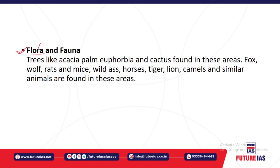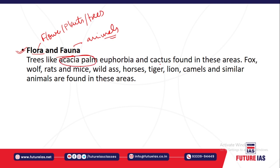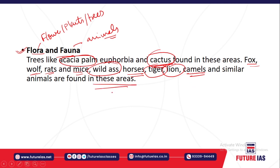Regarding flora and fauna: flora means the type of flowering plants or trees, fauna means the type of animal life found there. Most of the trees are acacia and palm, and cactus is found. Animals include fox, wolf, rats, mice, wild ass, horses, tiger, lion, camels, and other animals found in the drier portions of the desert region.